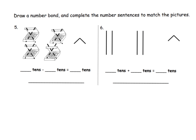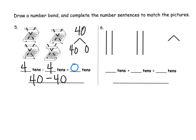Here, it's subtraction. We had four 10s, and then we're crossing off all four. So four 10s subtract four 10s leaves us with no 10s. Our number bond shows 40, then 40 and 0. As a number sentence, we'd write 40 minus 40 is equal to 0.